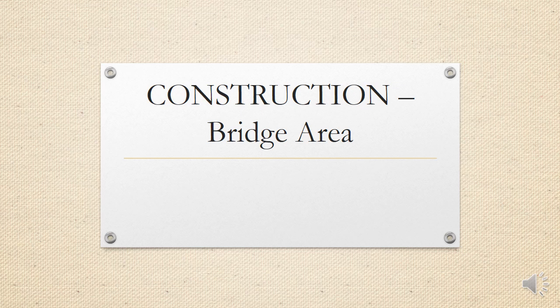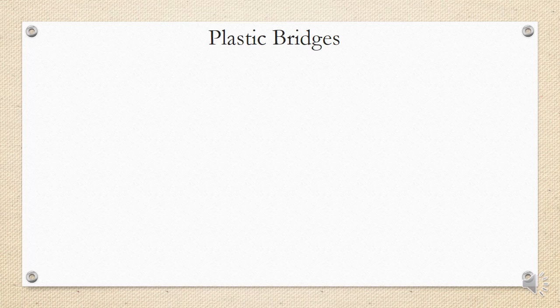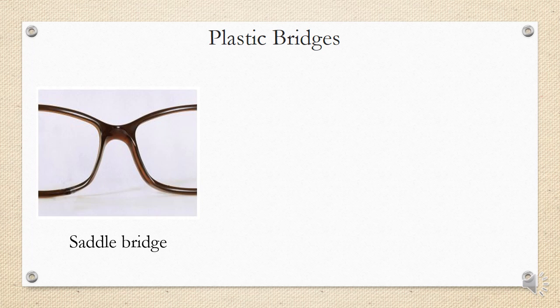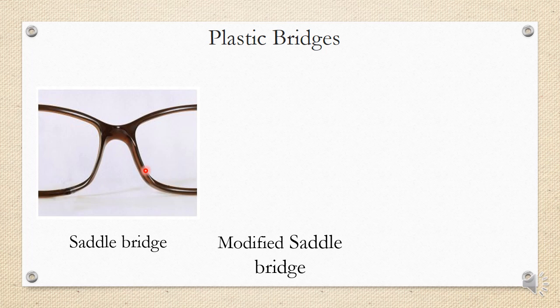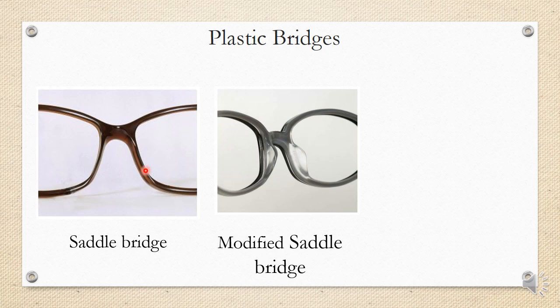Now let's discuss bridge types. For plastic frames, the first type is the saddle bridge — a simple saddle-shaped structure between the two eye wires, with no protrusions. The nasal crest rests in contact with the frame and weight is distributed across the entire saddle and both sides of the nose. The second is the modified saddle bridge, which increases the side area of the saddle for more contact and more even weight distribution.